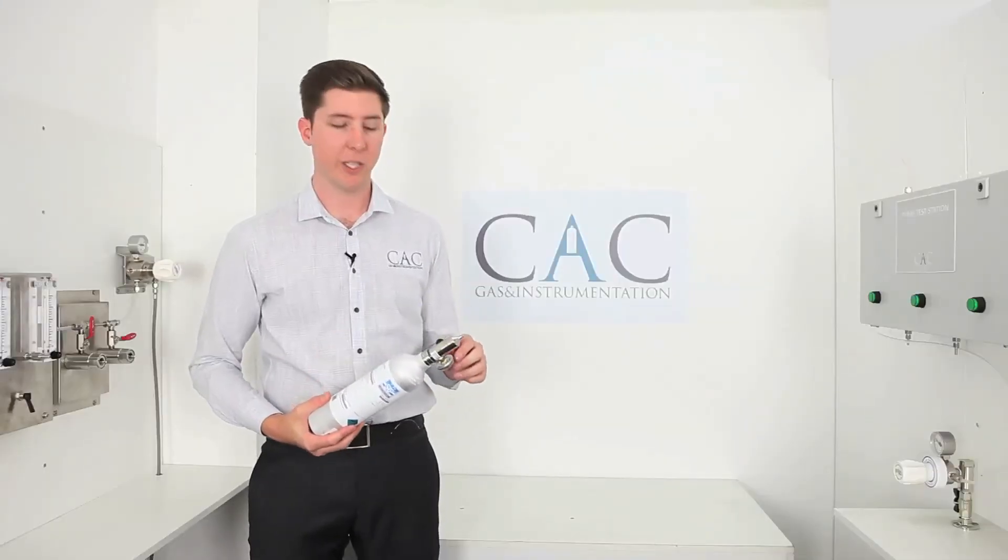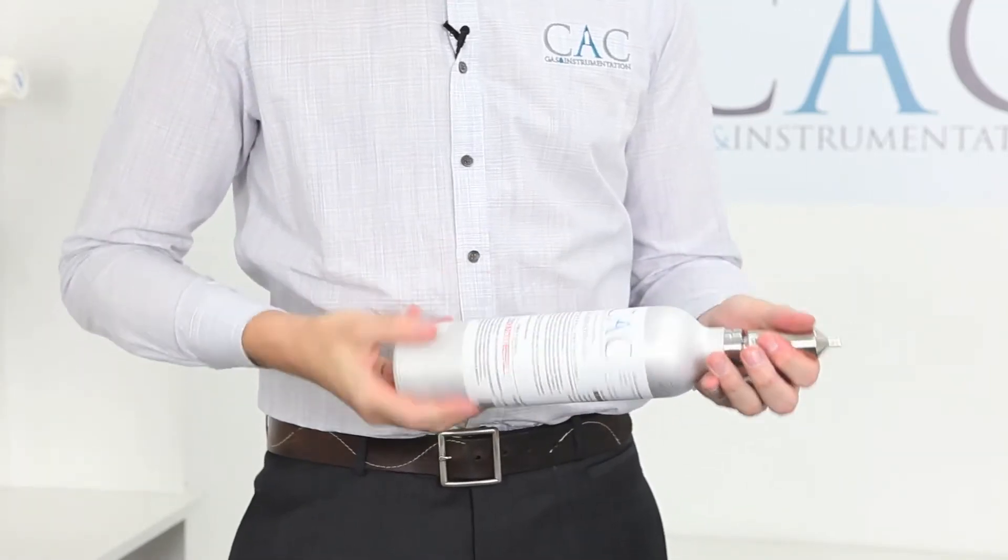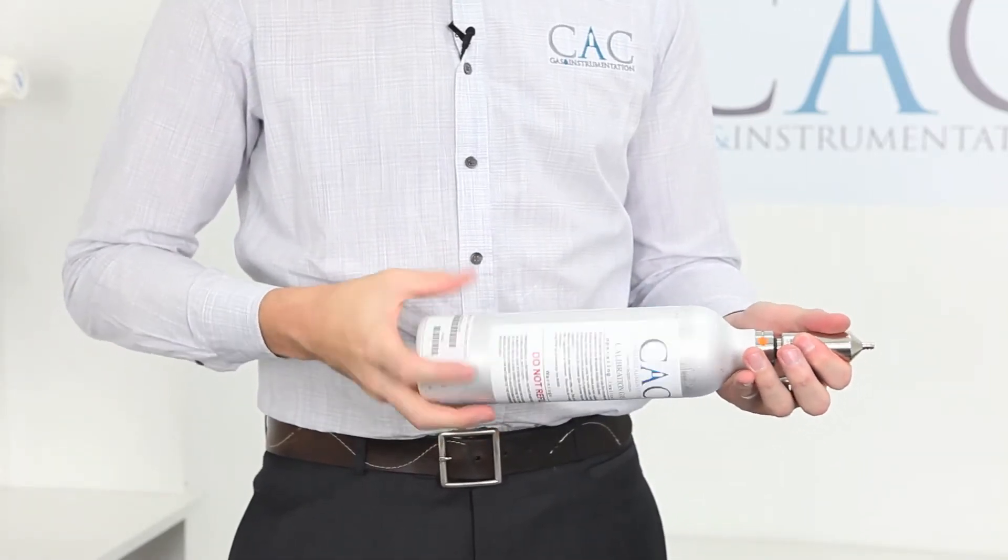To remove, simply repeat the process. Open the regulator until you hear the gas flowing, twist the cylinder counterclockwise, you'll hear a small hiss of gas and you're done.